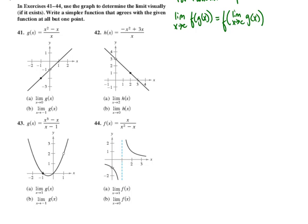In number 41, first we're asked to find the limit as x approaches 0 of g of x, and that limit is simply negative 1. Then, we're asked to find the limit as x approaches negative 1 of g of x, and from the graph, that's clearly negative 2.